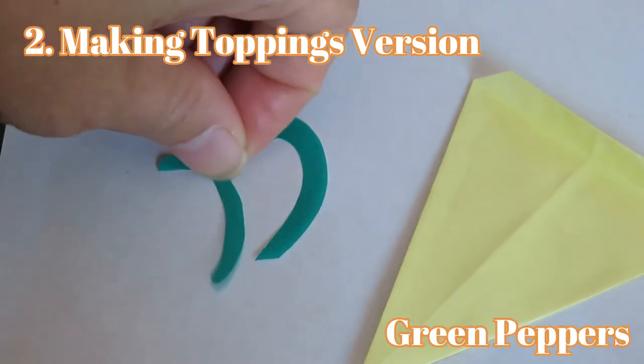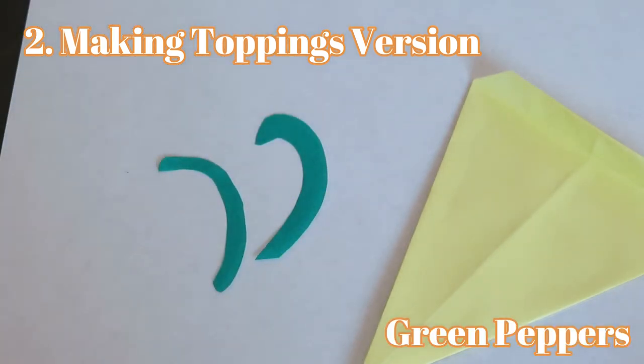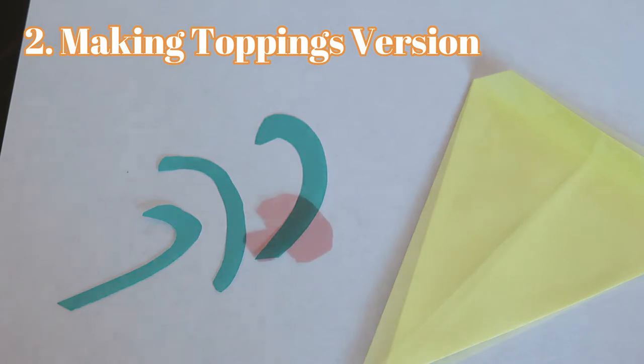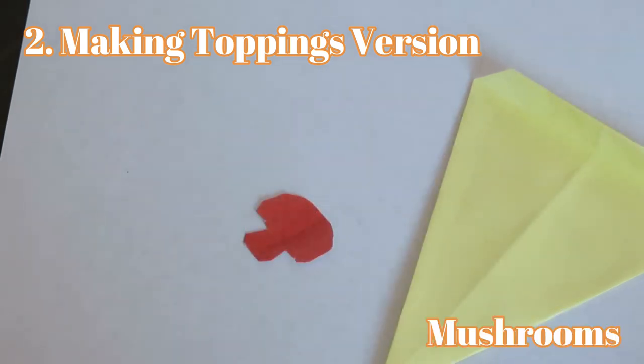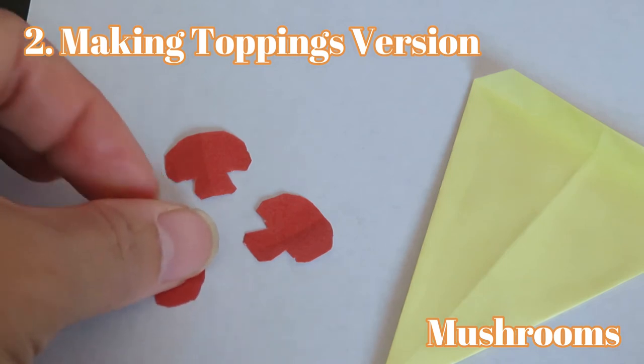Green peppers: cut the paper into curved strips just like canes. Mushrooms: cut out the paper any way you want looking like mushrooms.